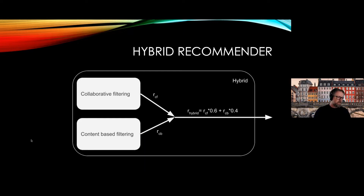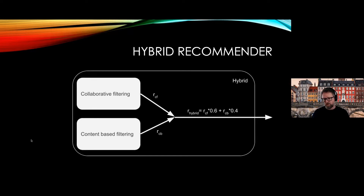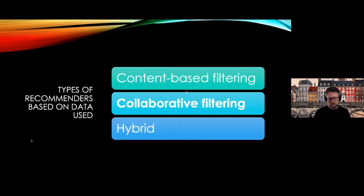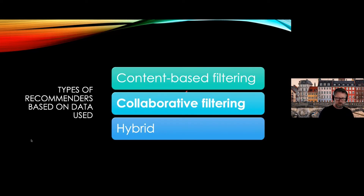The last type of recommender system is the hybrid, which just means you take a little bit from both camps. For example, you can do a linear combination taking output from both content-based and collaborative filtering, or interchange the two using data from both. Most of what I'll talk about today is in the collaborative filtering category.